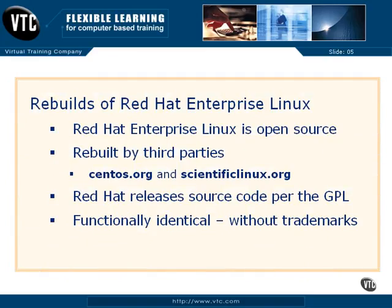What's a rebuild? As the source code behind Red Hat Enterprise Linux is released under the Linux General Public License, third parties such as CentOS and Scientific Linux have rebuilt the distribution. These are known as rebuilds as they build their distributions from the same source code used by Red Hat for Red Hat Enterprise Linux 5. For our purposes, they're functionally identical. You can download their rebuilds from the URLs noted here. The only difference is that the rebuilds are not allowed to use Red Hat trademarks, such as the picture of the guy in the red fedora. Everything else is functionally identical for the purposes of this video and this course.